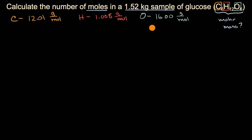So the molar mass of glucose is going to be six times the molar mass of carbon, plus 12 times the molar mass of hydrogen, plus six times the molar mass of oxygen.